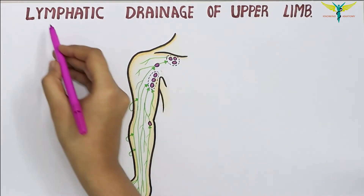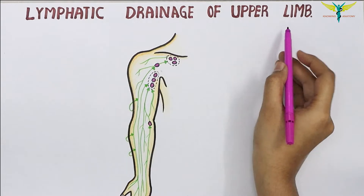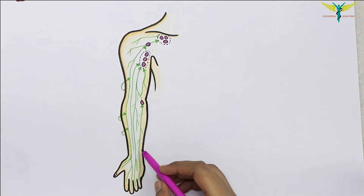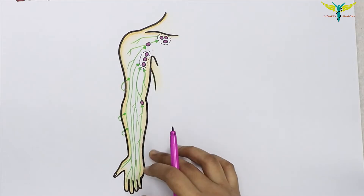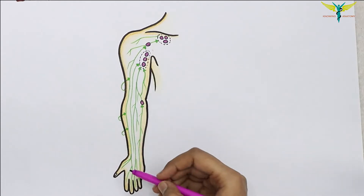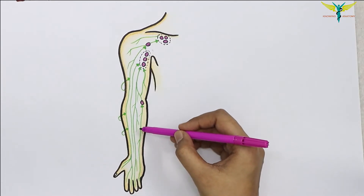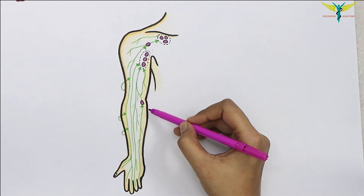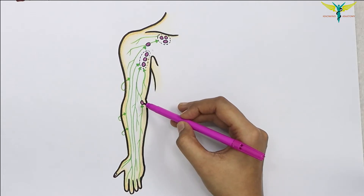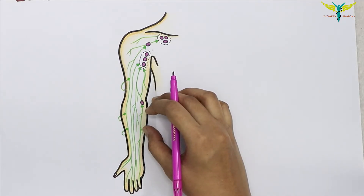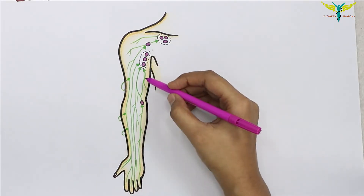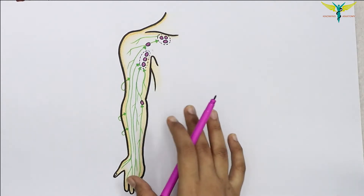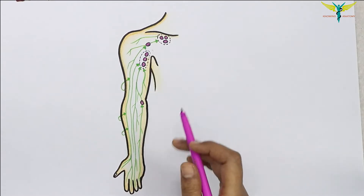In this video, let's learn about the lymphatic drainage of the upper limb. It starts with the unnamed limb vessels that originate in the hand and run upwards towards the axilla. When they reach the cubital fossa, the lymph passes through the cubital nodes, from where the lymph vessels run superiorly and drain into the axillary group of lymph nodes.